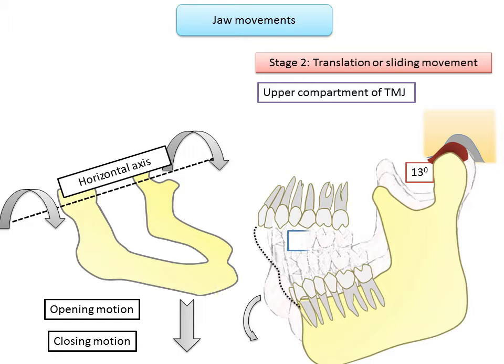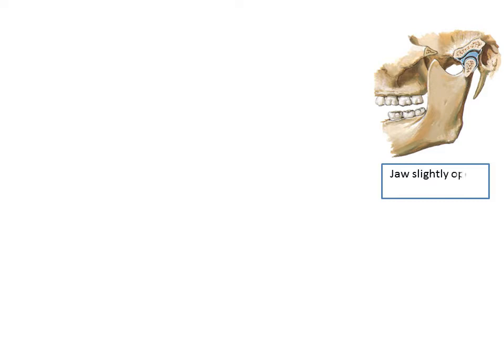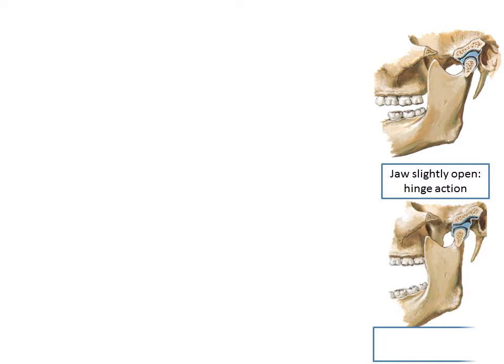In Stage 1 the jaws slightly open and the condyles exhibit a hinge action, whereas in Stage 2 — the translation phase — the jaws are widely open with maximum mouth opening, resulting in a combined hinge and gliding action of the condyle. You can see the condyle not only rotates but also translates, moving as a whole from its posterior-most position to the anterior position.